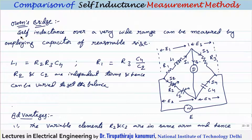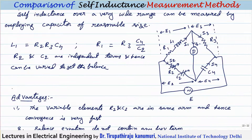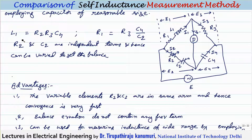The Owens bridge is used for measuring self-inductance over a very wide range by employing a capacitor of reasonable size. A variable capacitor is required, but it is smaller than in previous methods. The balance equations give L1 = R2R3C4 and R1 = R3C4/C2. Since R3 and C4 appear in both equations, the independent variables are R2 and C2, which are varied to obtain balance.